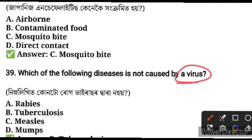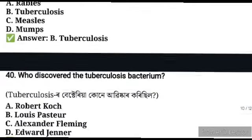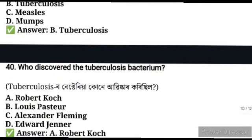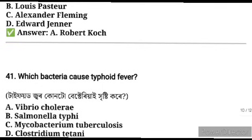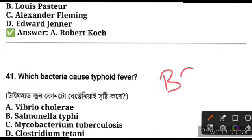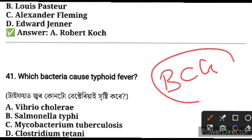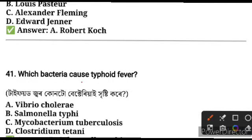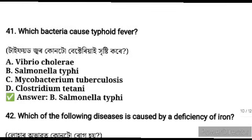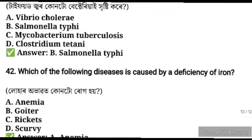Who discovered the tuberculosis bacterium? Robert Koch discovered the tuberculosis bacterium. BCG vaccine is used for prevention of tuberculosis. Which bacteria causes typhoid fever? Salmonella typhi causes typhoid fever.